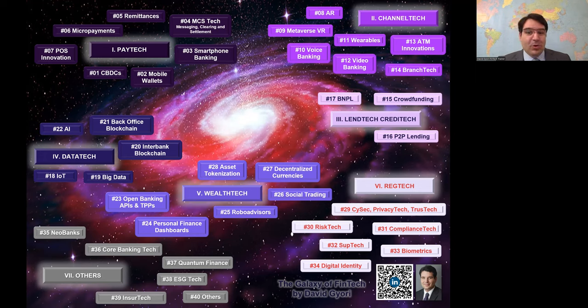We are now at Basel 3 and 4. I am now talking about Basel 5 and 6. Planet number 30, risk tech. Risk tech is about technology helping to manage risks. These are solutions making risk management faster, cheaper, more precise, more intelligent.